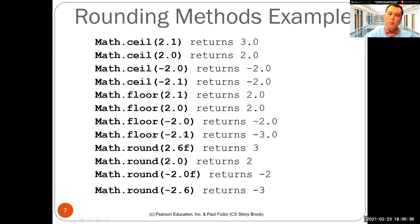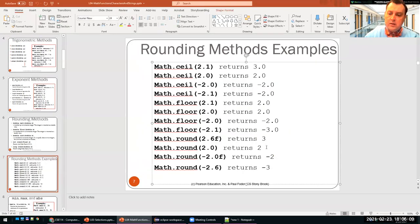Math dot floor of 2.1 is 2.0. Math dot floor of 2.0 is 2.0. Math dot floor of minus 2.0 is minus 2.0. Math dot floor of minus 2.1 is minus 3.0. Math dot round of 2.0 is 2 as a long. Math dot round of minus 2.0 of a float number returns minus 2 as an integer and math dot round of minus 2.6 returns minus 3. The only thing I want to add here is that these two are actually returned as long. So if you want to assign them to some integer variable, you have to cast them from long to integer.